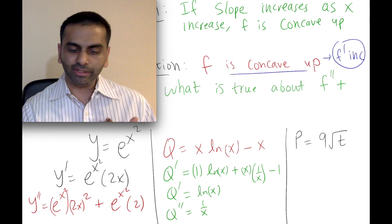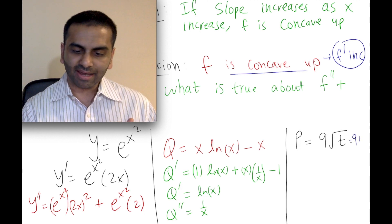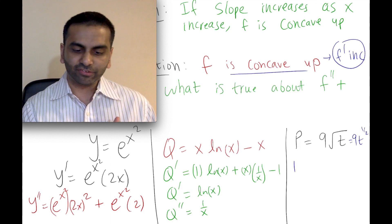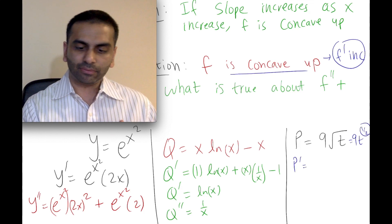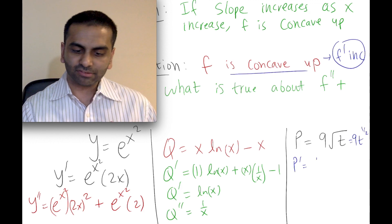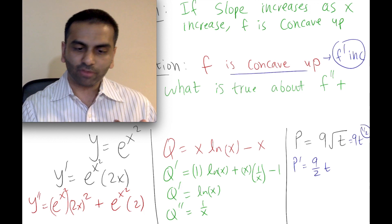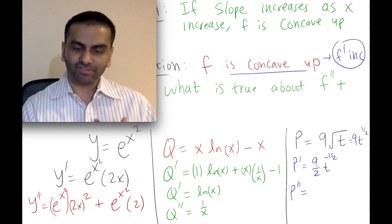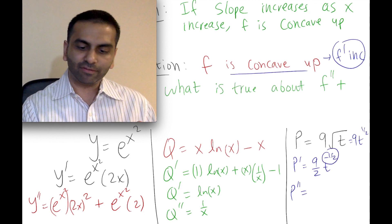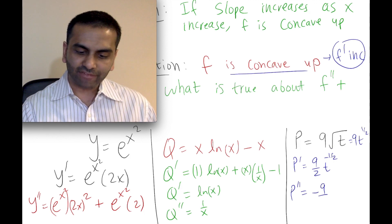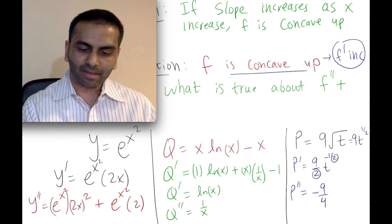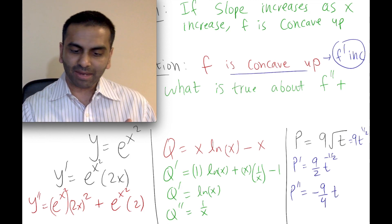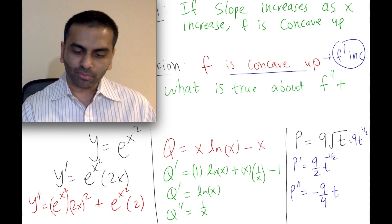For this example, it's wise to rewrite 9√t as 9t^(1/2). The first derivative by the power rule: bring down the 1/2, multiply to get 9/2, and subtract one from the exponent to get t^(-1/2), so the first derivative is (9/2)t^(-1/2). For the second derivative, bring down the -1/2: (-1/2)·(9/2) = -9/4, and subtract one from the exponent to get t^(-3/2). So the second derivative is -(9/4)t^(-3/2).